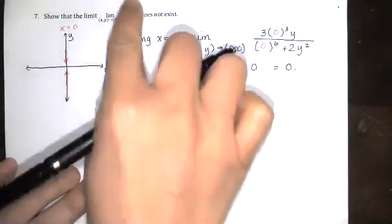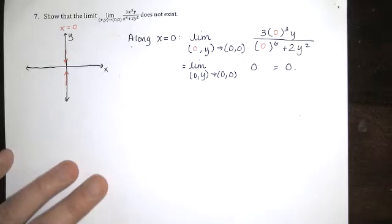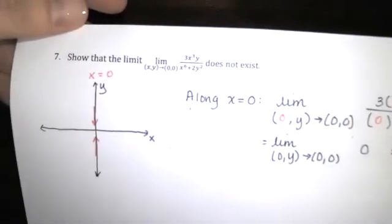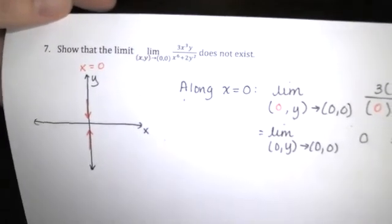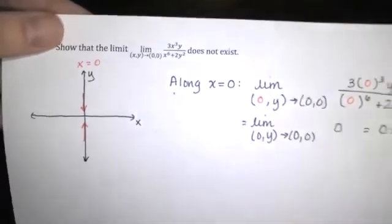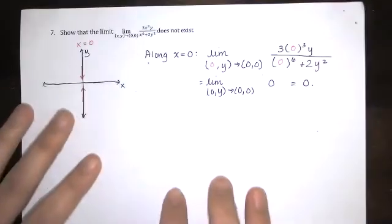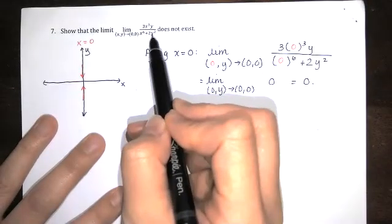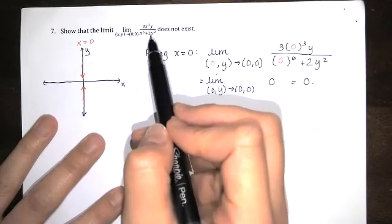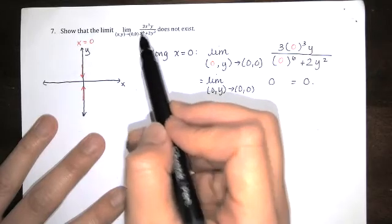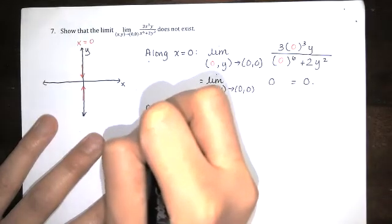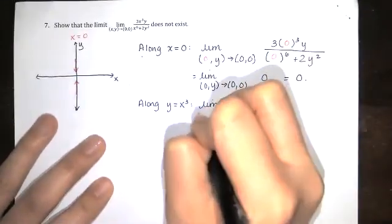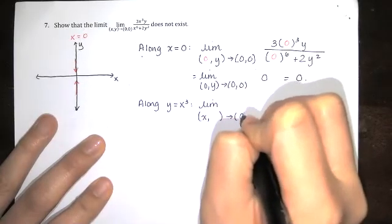Now if I looked at the path y equals 0, I'd get exactly the same answer again. So I don't want to go along the path y equals 0. Now look at this function. We'd like to choose a path so that the numerator and denominator are going to reduce really nicely. So I end up with a fraction that's not 0. Since I see an x cubed up here and a y squared down here, and I know that x cubed squared is x to the sixth, and x to the sixth is right here, I'm going to let y equal x cubed. So let's look at the path y equals x cubed.